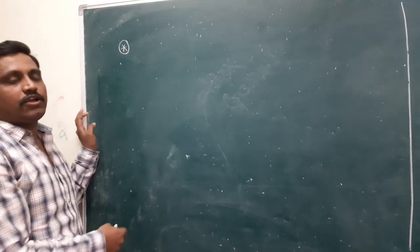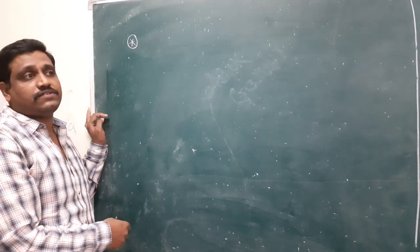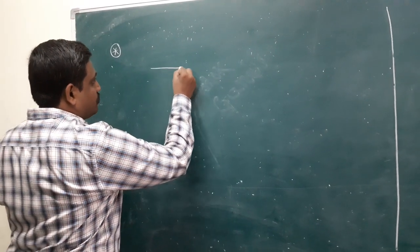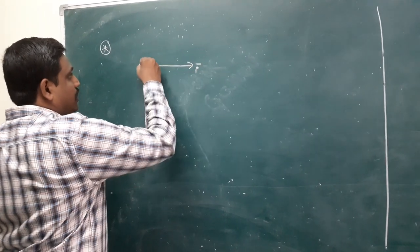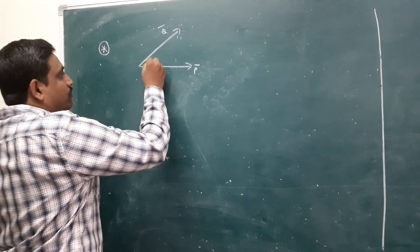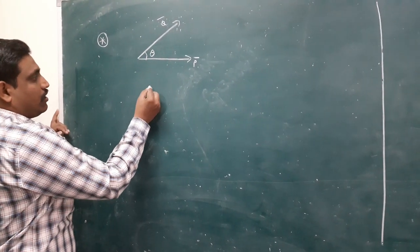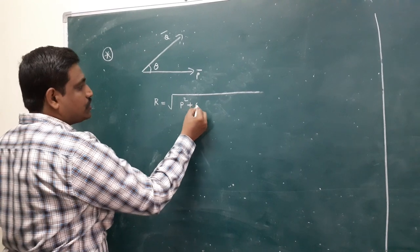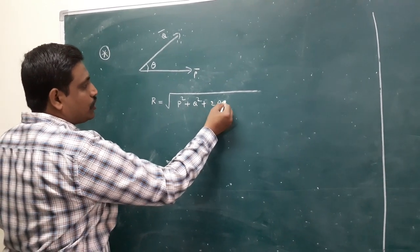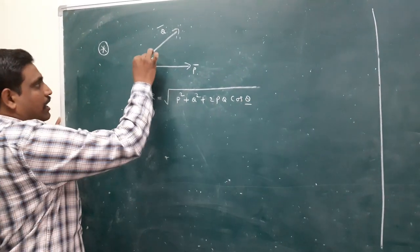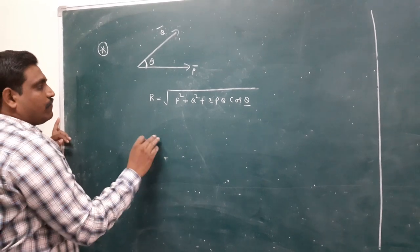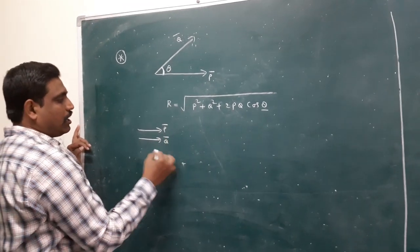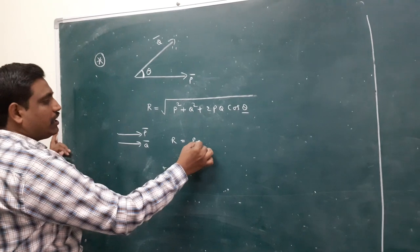Magnetic moment is a vector, so I first explain the parallelogram law. For example, this is one vector P bar, and another vector Q bar. The angle between P bar and Q bar is theta. If P bar and Q bar are both parallel, the formula gives R equal to P plus Q directly.